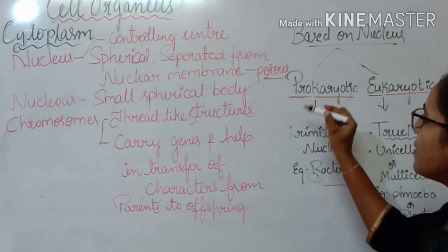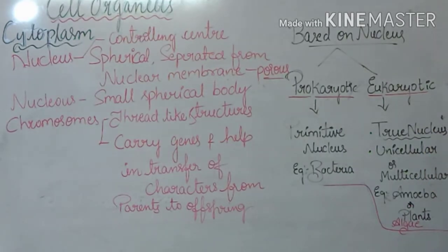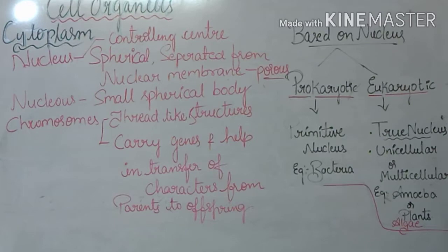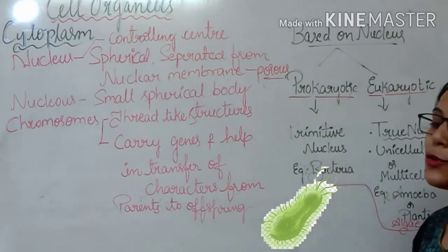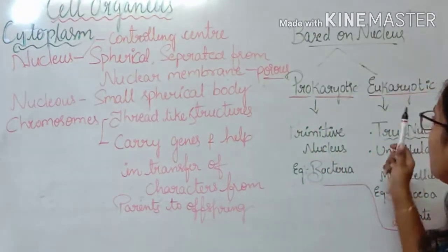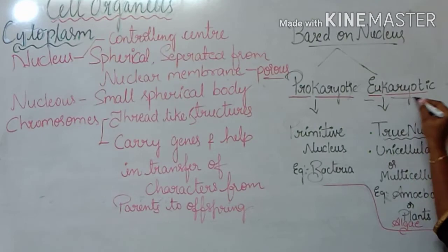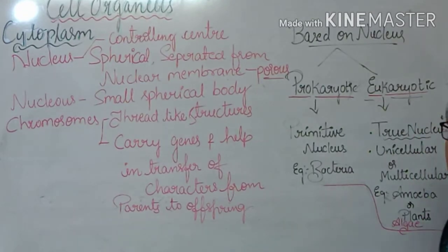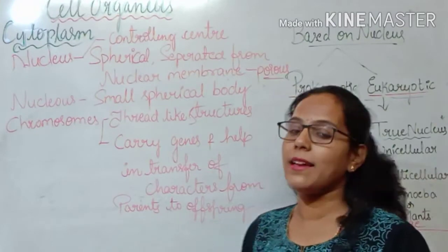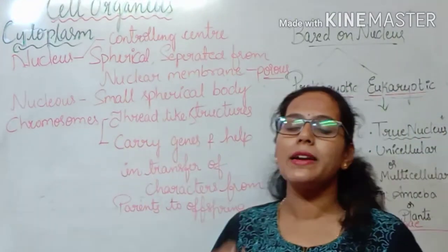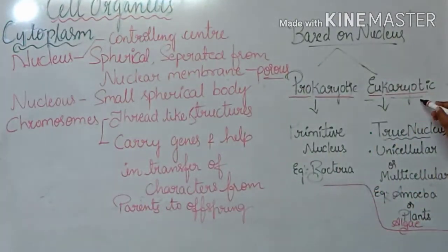What is meant by 'pro'? Pro means primitive. So cells which have a primitive nucleus are called prokaryotic cells. Bacteria are examples of prokaryotes. Eukaryotes are organisms which have a true nucleus — 'eu' means true, 'karyote' means cells. Cells which have a true nucleus, with cell organelles embedded inside, are called eukaryotes. They may be unicellular or multicellular organisms. Examples include amoeba, plants, and some blue-green algae.